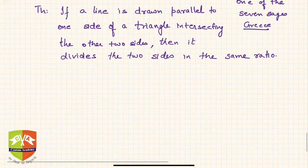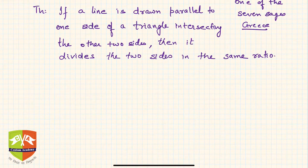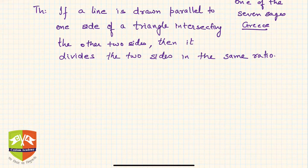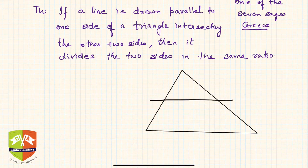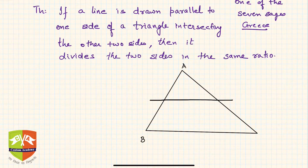Now let us understand this theorem. First, it talks about a triangle, so let us draw a triangle. Let's call this triangle ABC. The theorem says that if a line is drawn parallel to one of the sides — let's say we draw DE parallel to BC — it must also intersect the other two sides AB and AC.